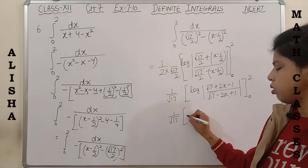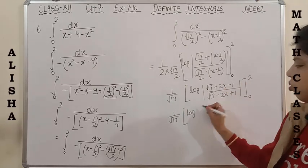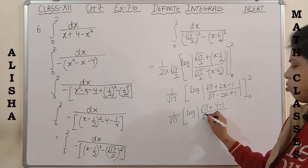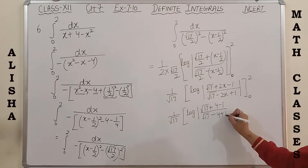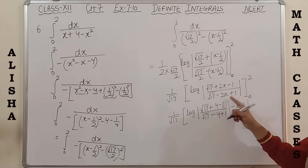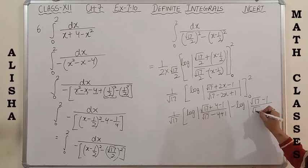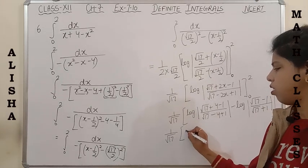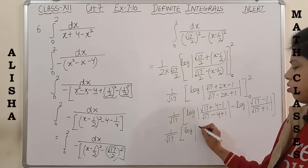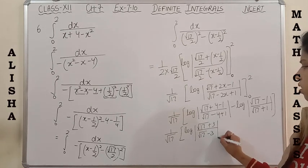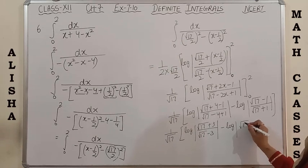Now putting the upper limit x = 2: we get (√17 + 2×2 - 1)/(√17 - 2×2 + 1) = (√17 + 3)/(√17 - 3). Putting the lower limit x = 0: we get (√17 - 1)/(√17 + 1). So it becomes (1/√17) × [log|(√17 + 3)/(√17 - 3)| - log|(√17 - 1)/(√17 + 1)|].